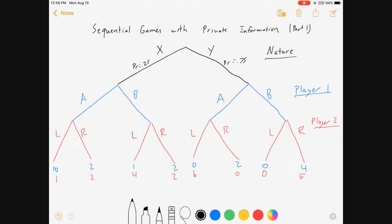We've got three things happening in the sequential game. First, the player called nature makes a move and we don't know what that move is exactly. We know there's a 25% chance that nature will put us on the X tree or the left tree, and there's a 75% chance we'll wind up on the right tree or the Y tree.